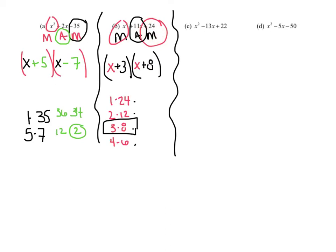Why don't you pause it, try the last two, and see if we're on the same page. Well, there you have my factors. I've got x minus 11 and x minus 2. These two multiply to a positive and add to a negative. Negative 10 and positive 5 multiply to a negative 50, but add to a negative 5.